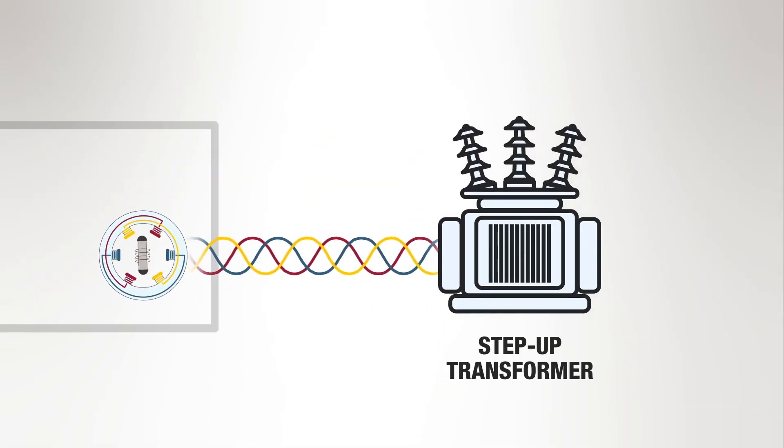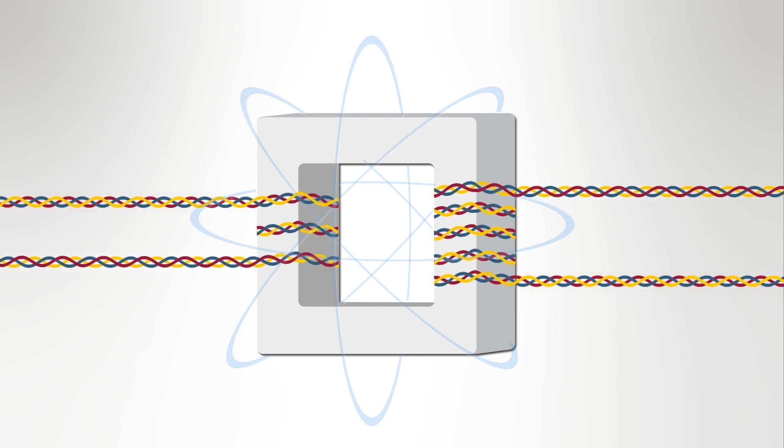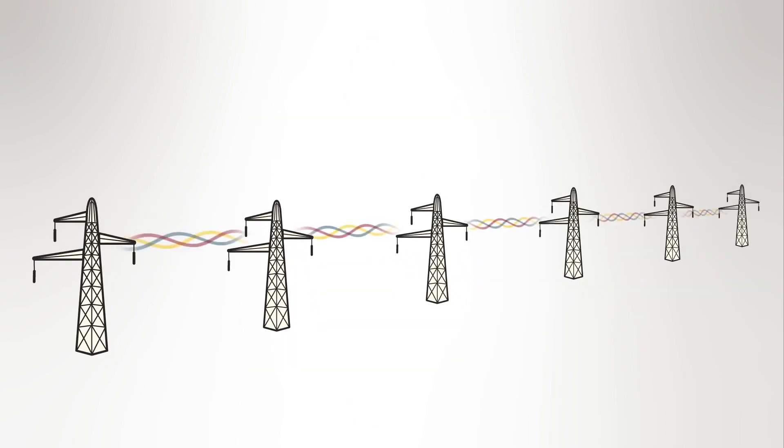A step-up transformer increases the voltage generated at the facility. The transformer relies on electromagnetic waves and added coils in the secondary side of the transformer to increase voltage. This increased voltage is necessary for transmitting power over long distances.